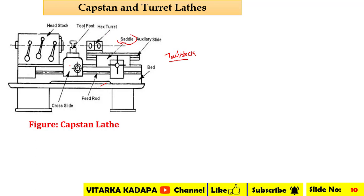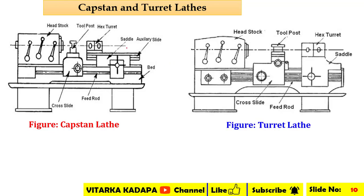We have the cross slide, carriage, tool post, and everything else in common. If you observe the difference from capstan lathe to the turret lathe — this is the turret lathe case — this particular surface has a change when you compare the normal engine lathe to the capstan lathe.